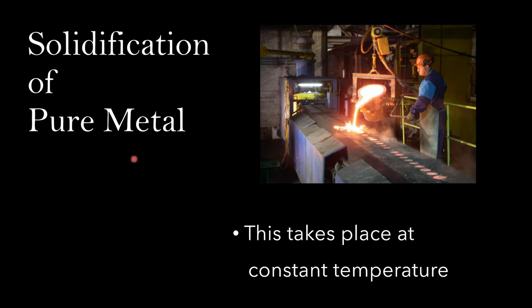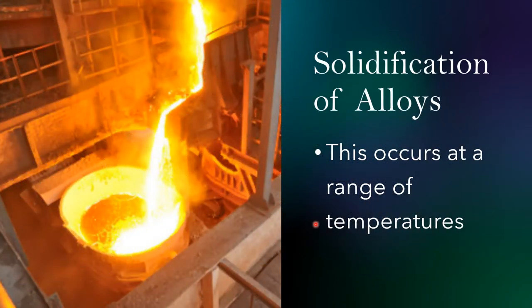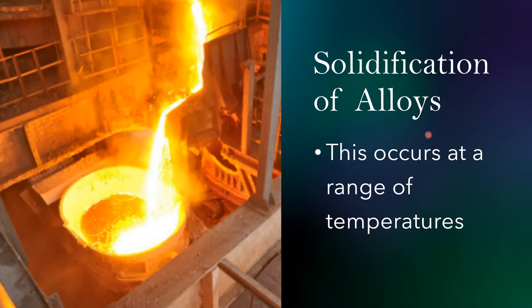When it comes to solidification casting of pure metals, this takes place at a constant temperature. When dealing with alloys, however, solidification can happen over a wide range of temperatures, depending on the alloy material. You need to consult a handbook of alloys to find the temperature range required to melt a given alloy. Pure metals can be cast at a constant temperature, but alloys require dealing with a range of temperatures.